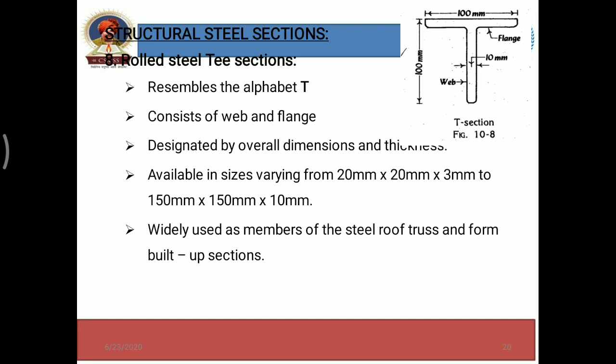A T section consists of two main parts: the vertical part, which is called the web, and the horizontal part of the T, which is called the flange. It is designated by its overall dimensions and thickness.